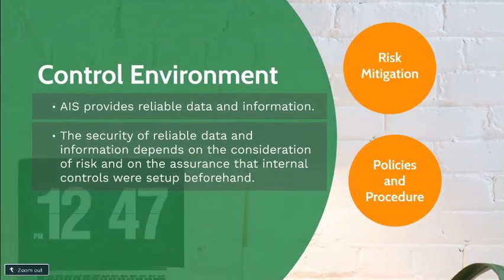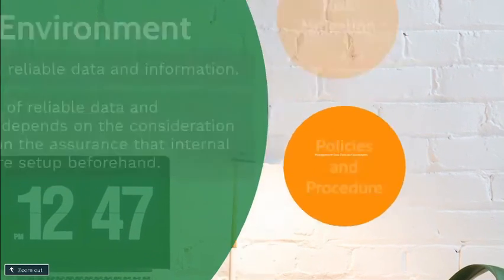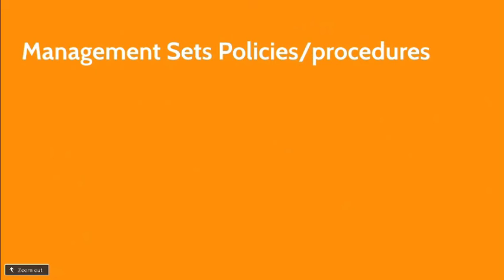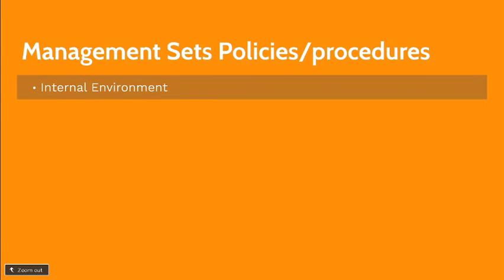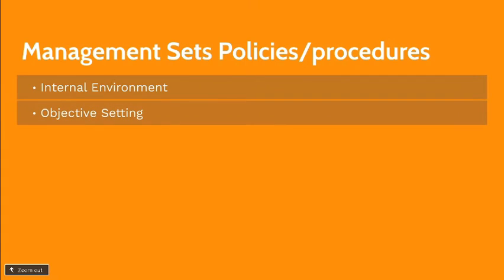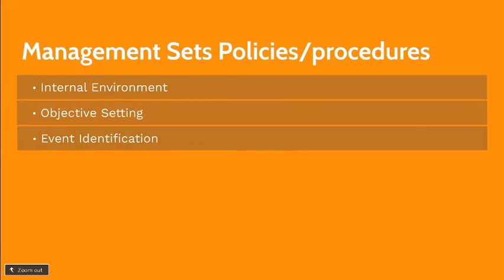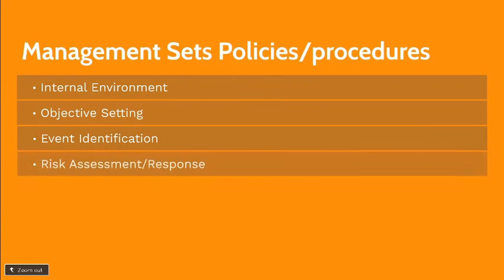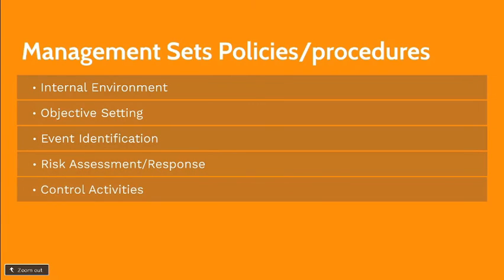After the identification of risk, the organization or management sets policies and procedures pertaining to the following: internal environment, objective setting, event identification, risk assessment or response, control activities, and monitoring and communications.